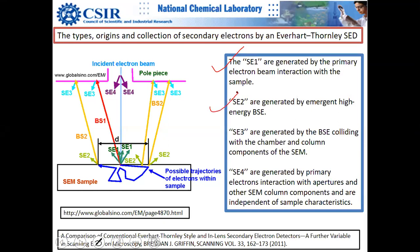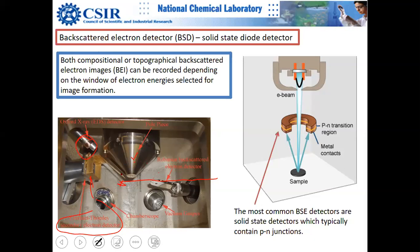SE2 electrons are part of the overall signal, not just SE1. SE2 does not create a serious problem in imaging. The problem is SE3 — generated when backscattered electrons collide with the lens system or chamber walls and cause those materials to emit secondary electrons, which can also be picked up by the detector.